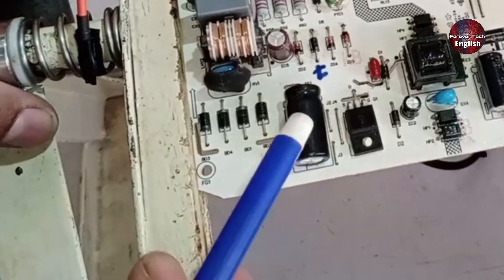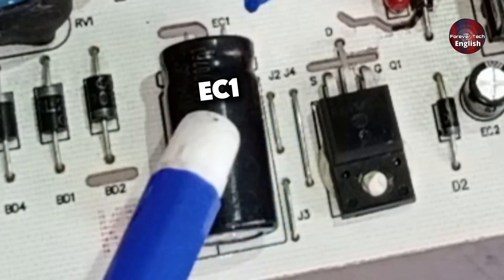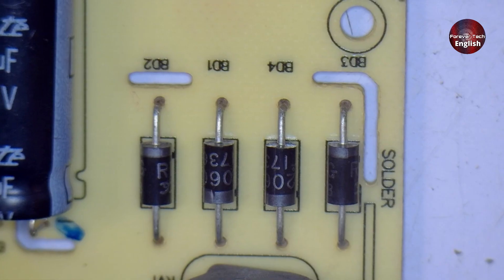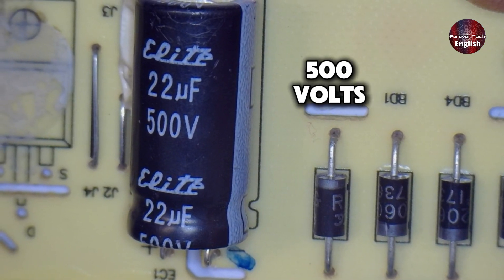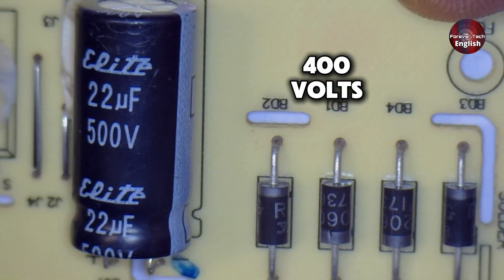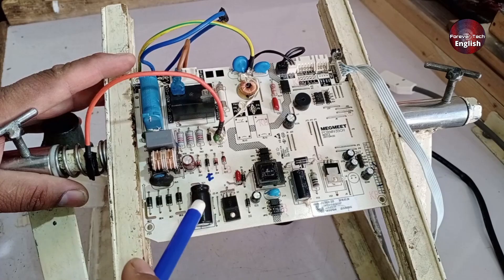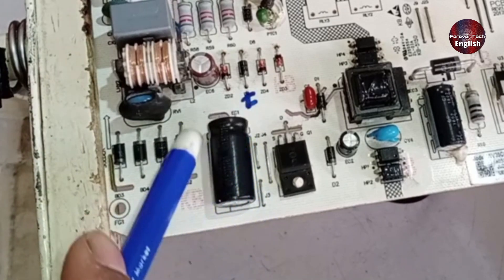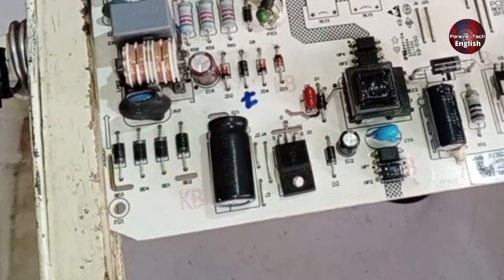Now, let me tell you one more thing. This capacitor here, labeled EC1, if it is short-circuited, the PCB will not work. But there's one more important thing I need to explain. This capacitor has a capacity of around 500 volts. If you replace it with a 400 volt or 450 volt capacitor, it will not work and will likely explode within a nanosecond. That's why, when replacing it, you need to make sure to install a 500 volt capacitor, and its capacity should be 22 microfarads.